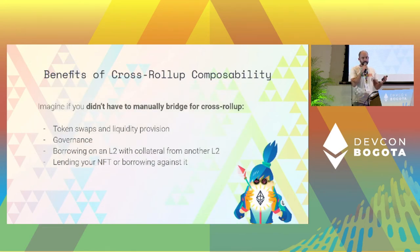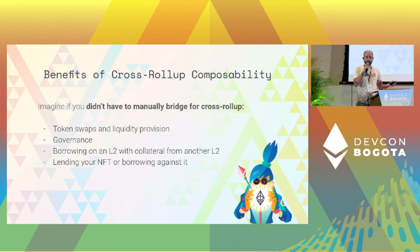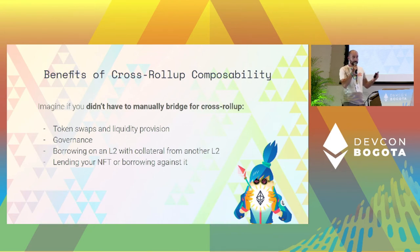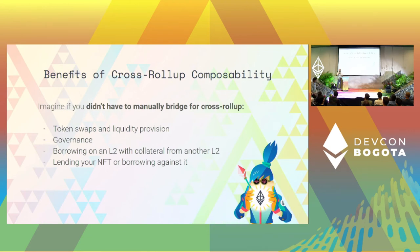The benefits of this cross-rollup composability for the end user would be that they don't have to manually bridge anymore for any kind of cross-rollup transaction — like a token swap, moving liquidity, governance actions like voting, market making, money market transactions like lending or borrowing without having to move the collateral, or NFT marketplaces where they can list NFTs on whichever L2 they want.